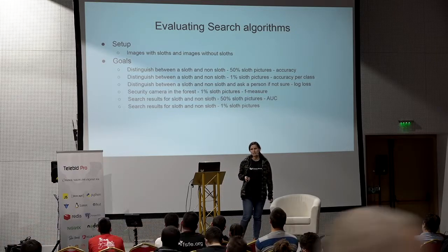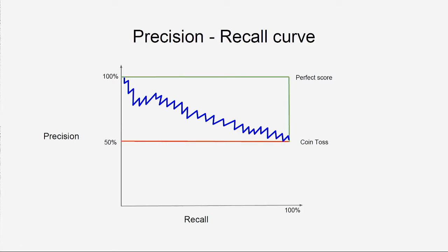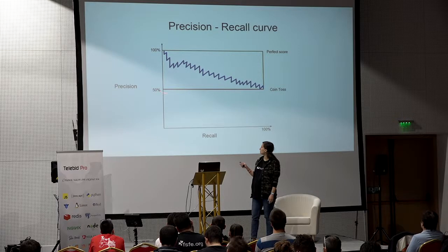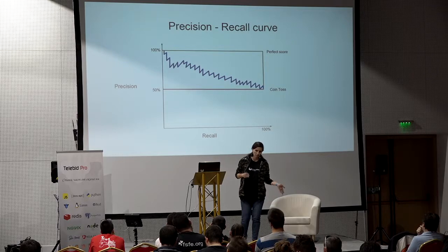ROC curves with area under the curve are useful, but this metric is not very good if our classes are imbalanced — if we have only 1% slot pictures, we get similar problems as with accuracy. For imbalanced classes, we can use precision and recall, doing basically the same thing: for each point calculate the precision and recall and plot them. This time, the coin toss baseline is a horizontal line at 50%, because with random guessing we'd always get around 50% precision.